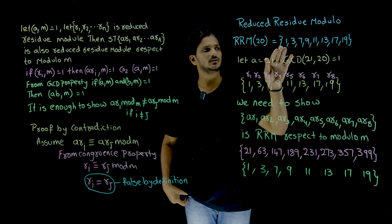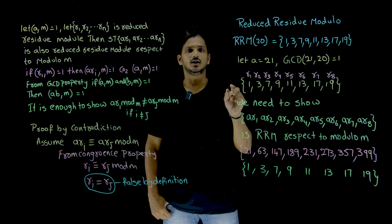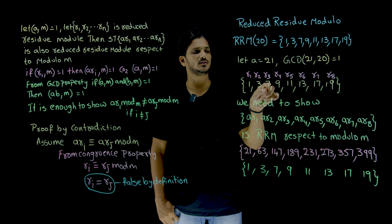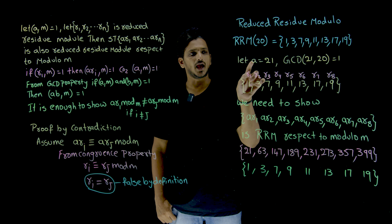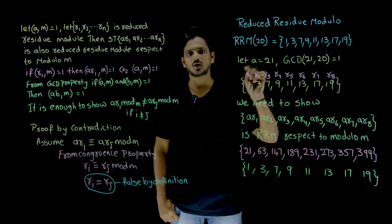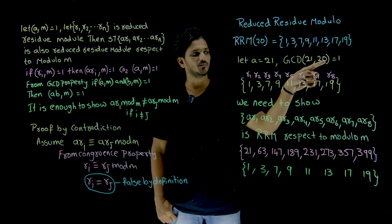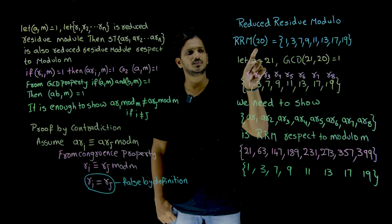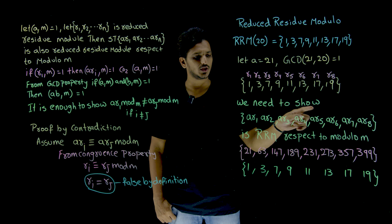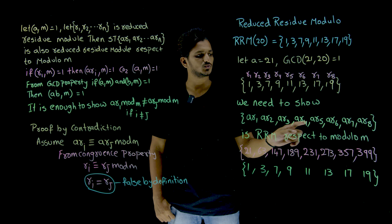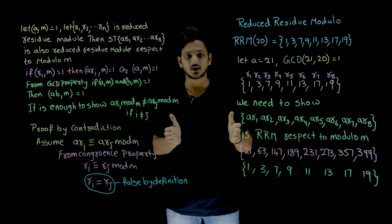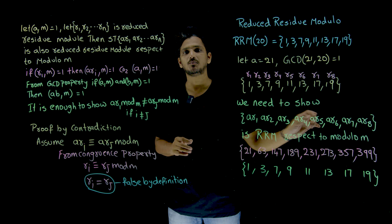So if you take a reduced residue modulo set, let's assume A = 21, and the set elements are R1, R2, R3, R4, up to R8. Assume GCD(21, 20) = 1, or more generally GCD(A, M) = 1. Then we need to show that A·R1, A·R2, ..., A·R8 also form a reduced residue modulo set with respect to modulo M.